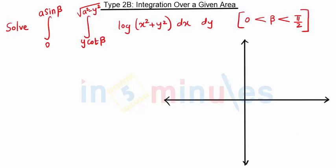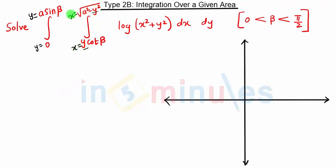Hello everyone, welcome to 'In 5 Minutes'. In this video we are going to see the next problem on type 2b. Here we are given the limits already. We have the variable y, so these limits are of x, meaning x equals this expression. The remaining variable is y, so these are the limits of y. Whenever we have the variable in the limits, we integrate that variable first.